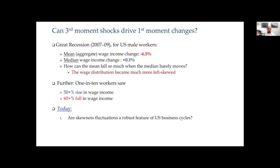Today I'm going to ask three specific questions. The first one is: are skewness fluctuations a robust feature of US business cycles? By that I mean both on the worker side — worker incomes — and on the firm side, for variables like sales growth, employment growth, and TFP shocks. The answer will be yes.